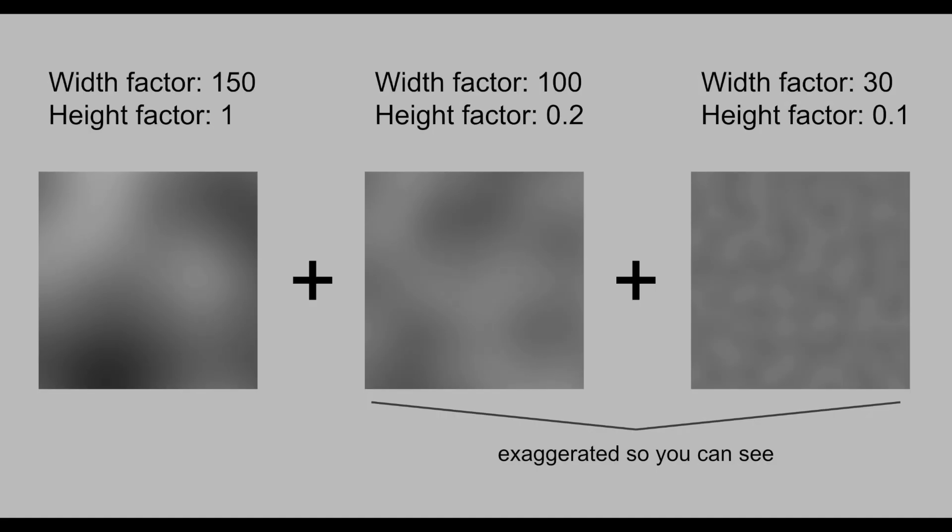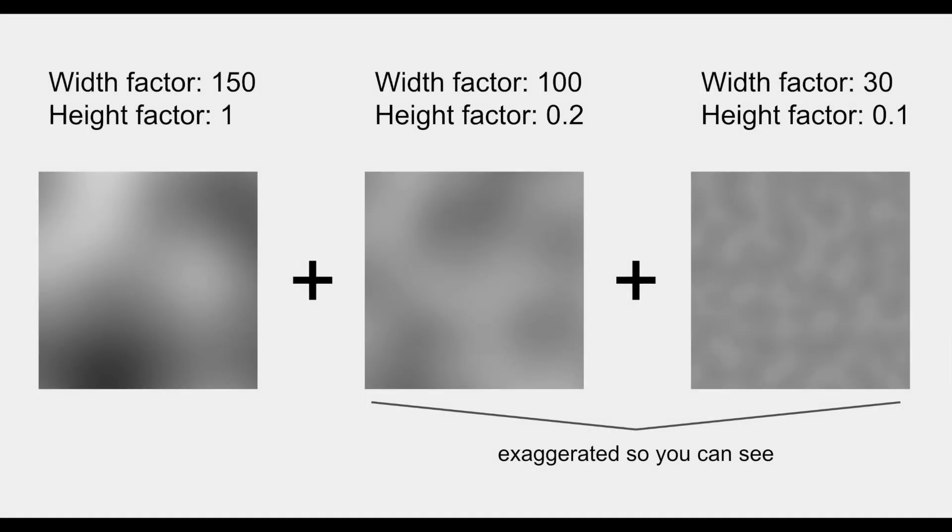And this is how the general shape of the terrain in Autumn in Acadia is made. In my project, there are three layers of Perlin noise added together.